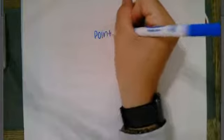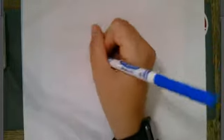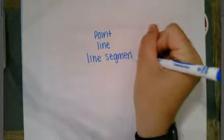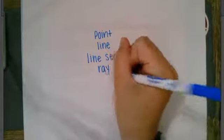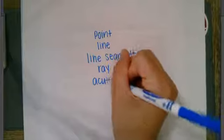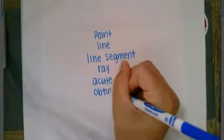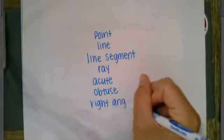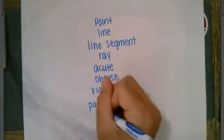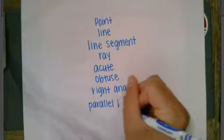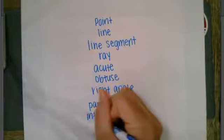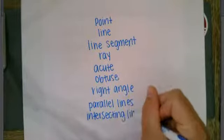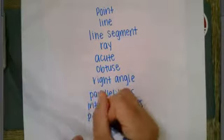Point. Line. Line segment. Ray. Acute. Obtuse. Right angle. Parallel lines. Intersecting lines. And then finally, perpendicular lines.